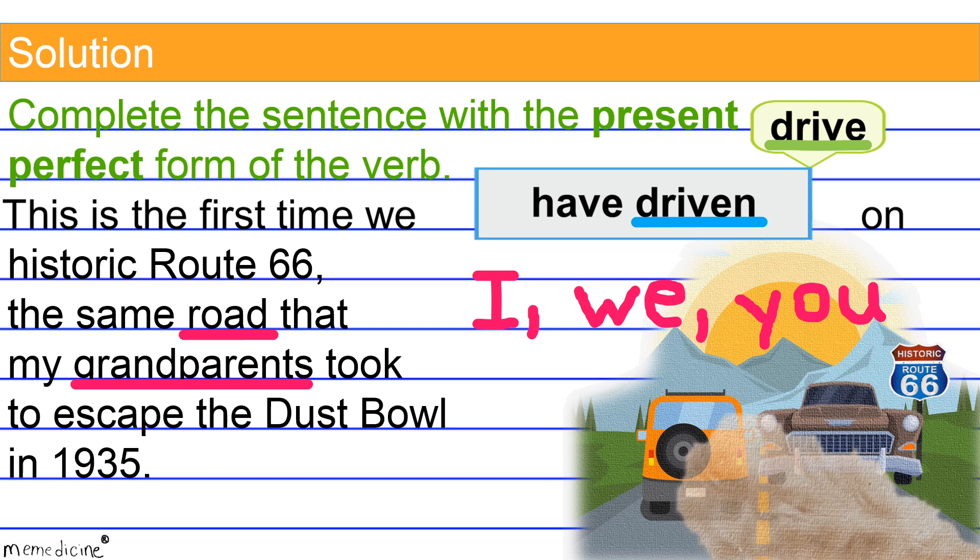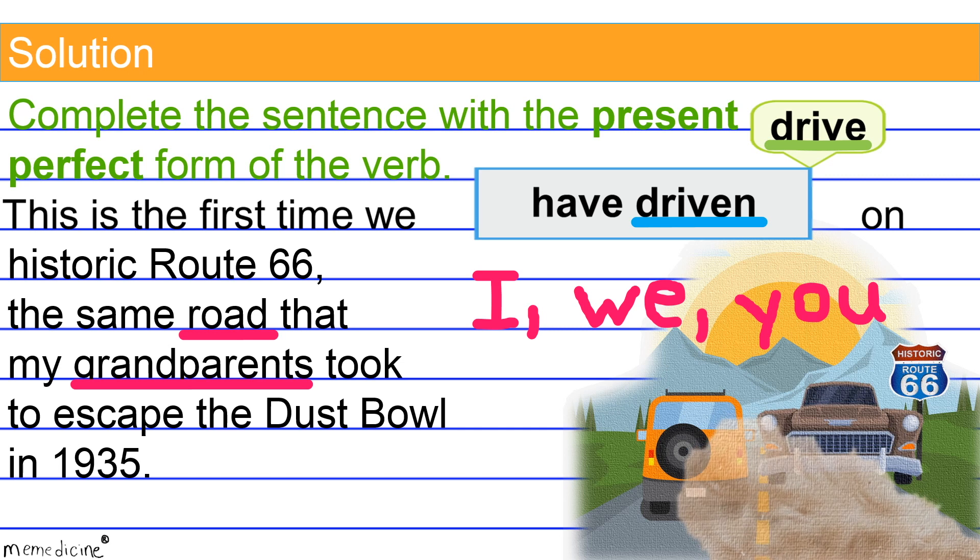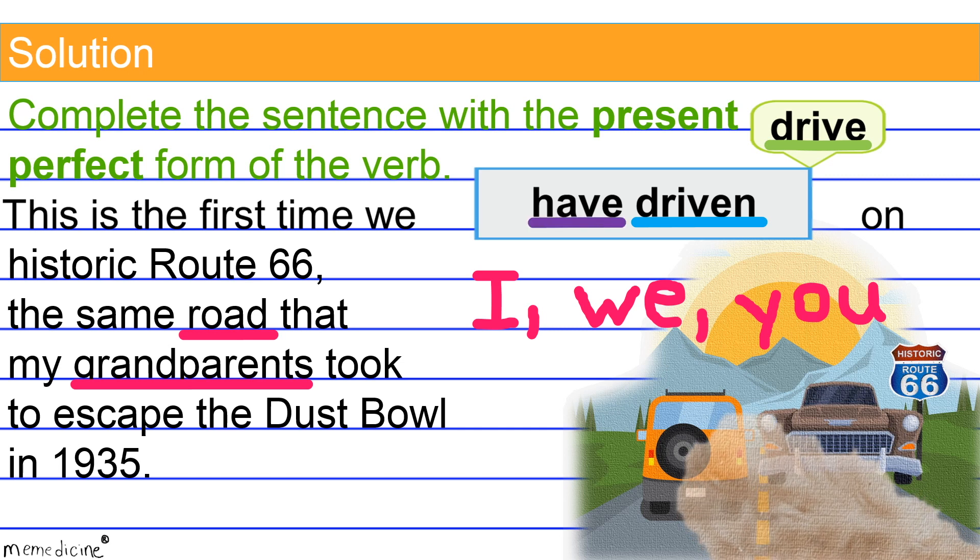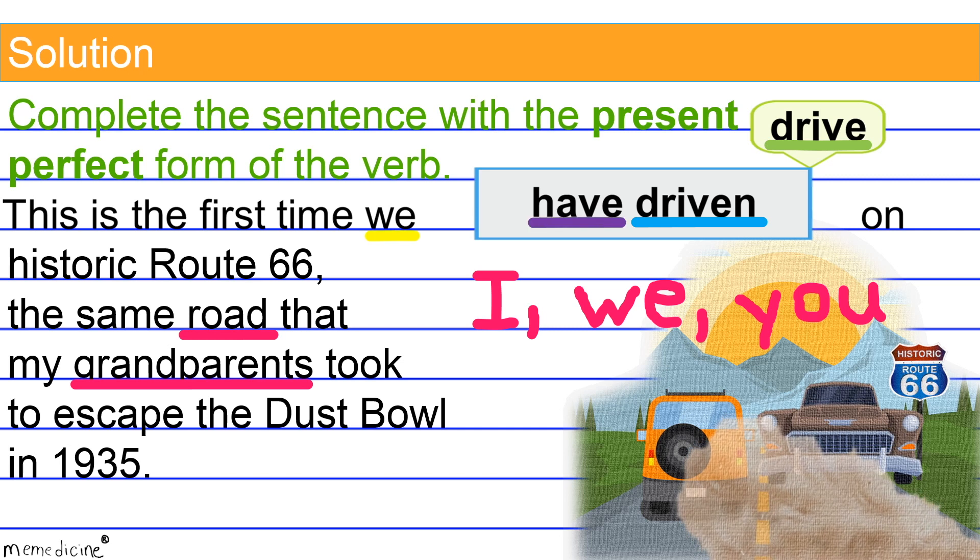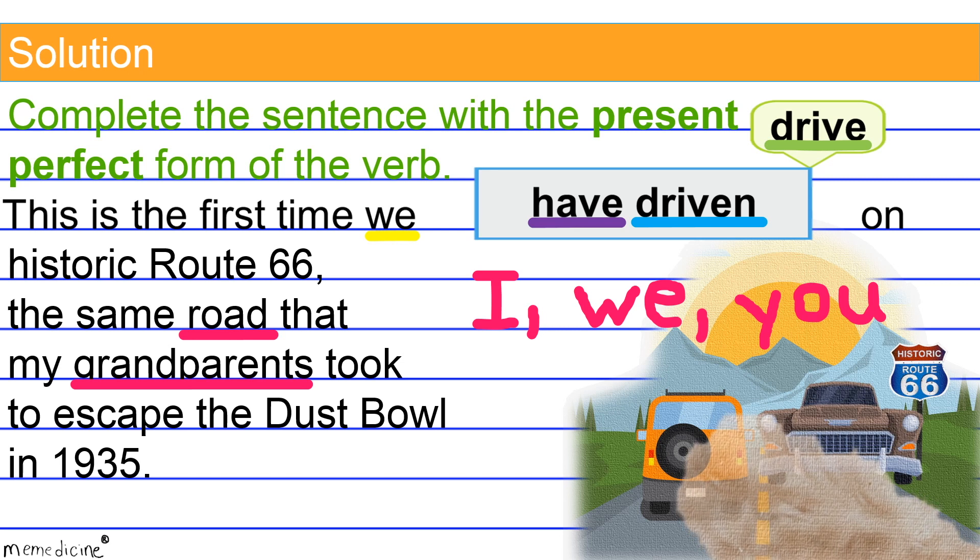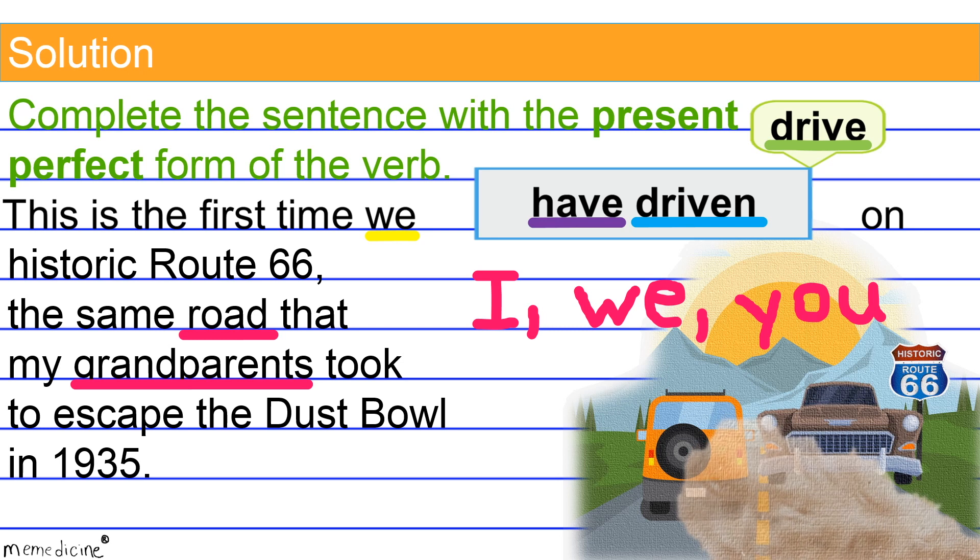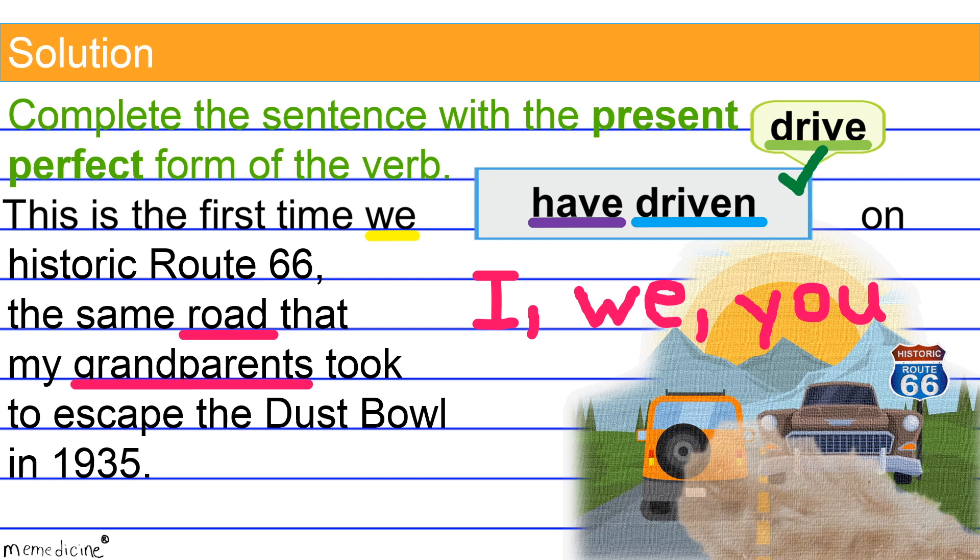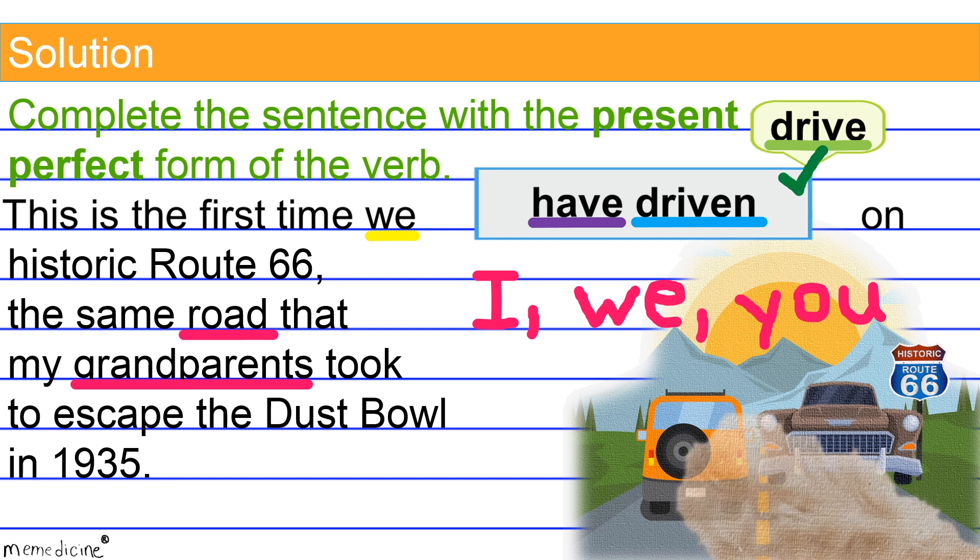Moving along, we have preceded driven with the present tense form of the helping verb to have that agrees in number with the subject of the verb we, a plural first person noun. Basically, with everything I've said, what I'm really trying to say is have driven is definitely the correct present perfect tense verb form of drive.